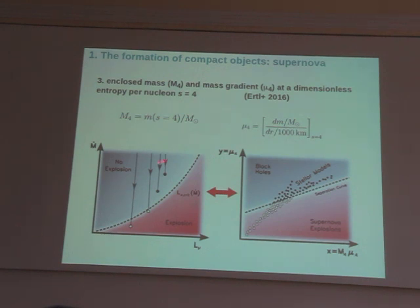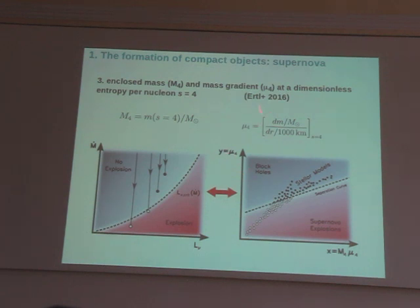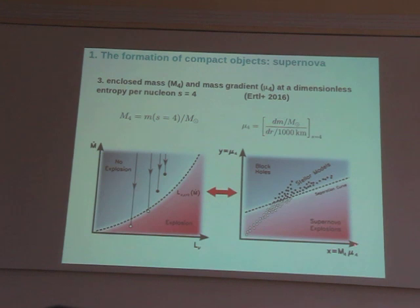This idea to use these two parameters is based on the fact that the mass accretion from the outer portion of the star is proportional to mu4, the mass gradient, while the energy that can be irradiated by neutrinos is proportional to M4 times mu4. So basically M4 times mu4 measures how efficient neutrinos are in producing the supernova, while mu4 is a measure of how heavy the outer layers are and how much efficiency they have in quenching the supernova.